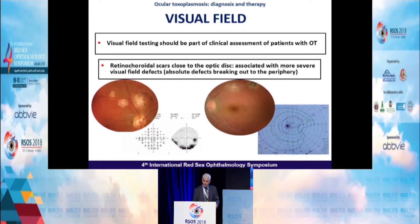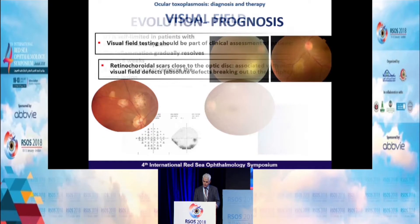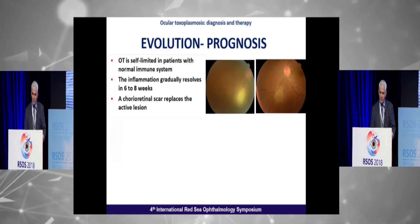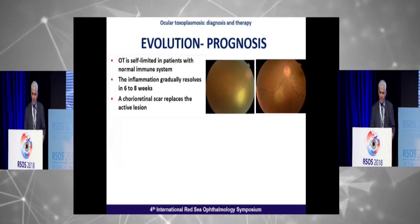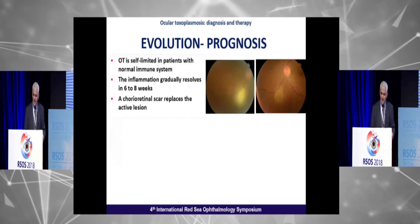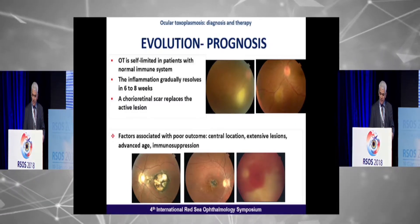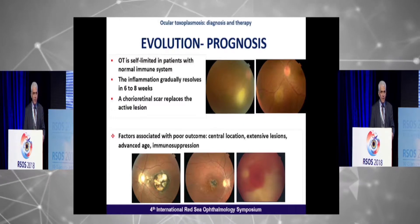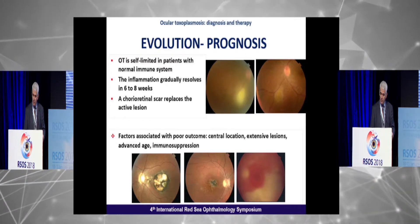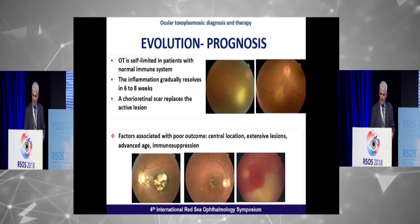Visual field should be part of the clinical assessment of patients with ocular Toxoplasmosis. Retinochoroiditis close to the optic disc is associated with more severe visual field defects. Prognosis is good in most immunocompetent patients — inflammation gradually resolves in six to eight weeks, leaving a chorioretinal scar. However, factors associated with poor outcome include central location of lesions, extensive lesions, multifocal retinochoroiditis, advanced age, and immune suppression.